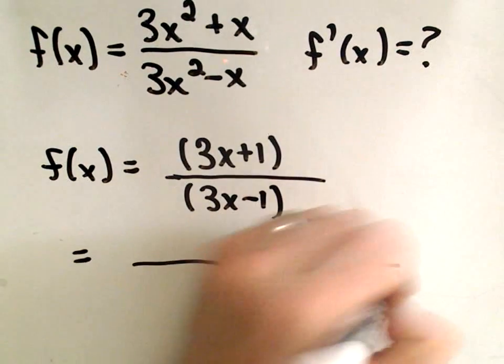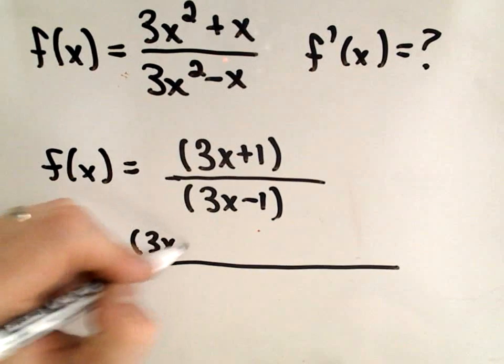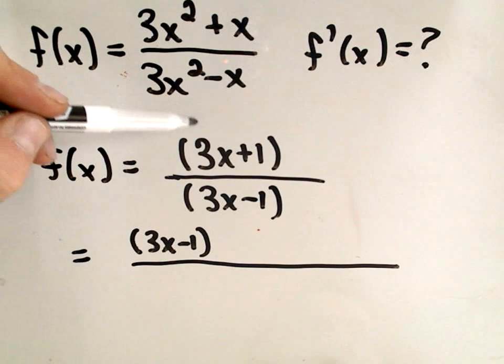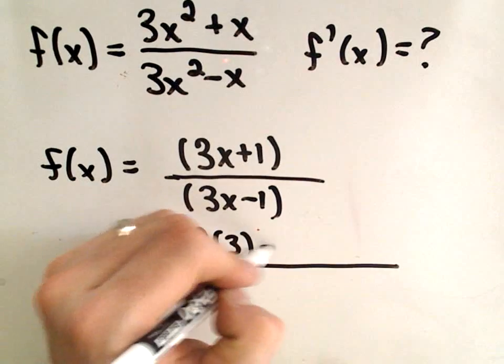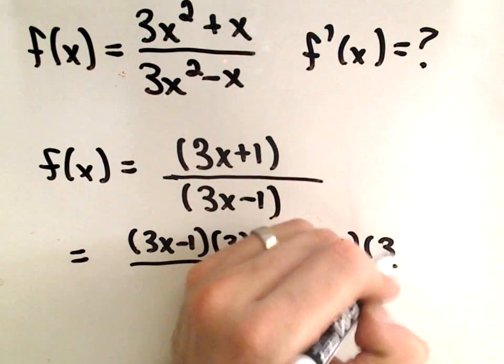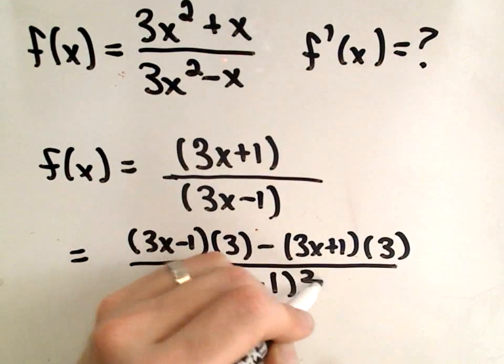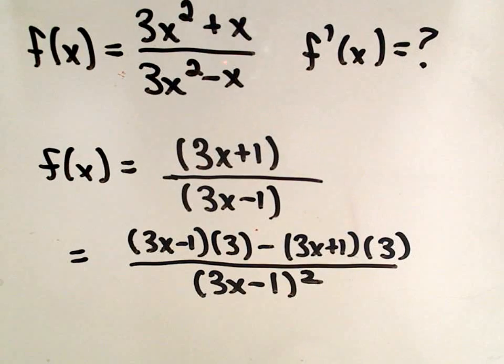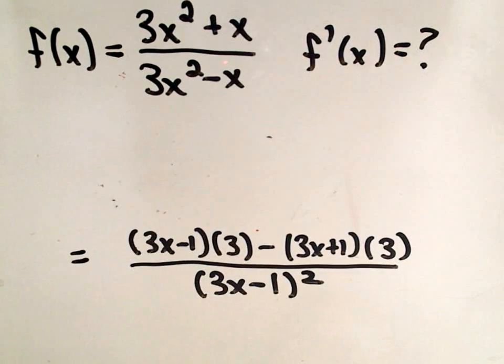So if you need to, rewind and jot it down real quick. It says you get the bottom times the derivative of the top, well the derivative of 3x is just 3, the 1 goes away, minus the top, 3x plus 1, times the derivative of the bottom, which is 3. It says we take all of the denominator and square it.